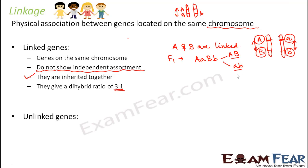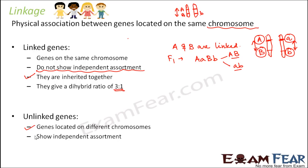On the other hand, unlinked genes are located on different chromosomes, so there is no physical association between them. They can also be considered unlinked if they are on the same chromosome but very far apart from each other. In both cases they show independent assortment. Since there is no physical linkage, each gene can independently assort in its own way.